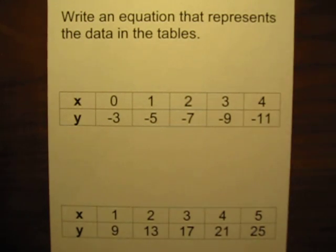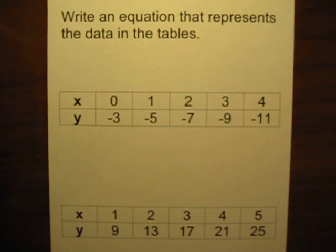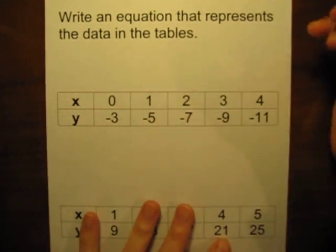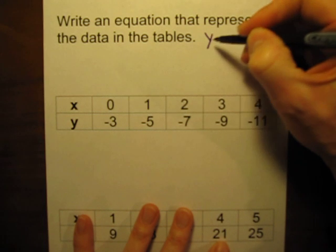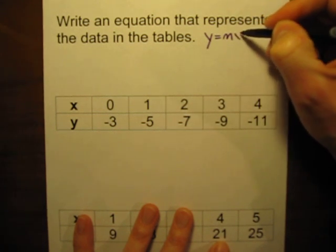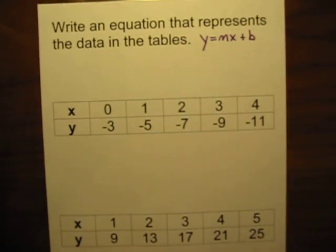Now it's time to take data in a data table and write an equation for it. Write an equation to represent the data in the data table. I'm going to make it easier for you by telling you that all three data tables we're going to look at are linear. So the equations we write will all be in the form y equals mx plus b, which is slope-intercept form.